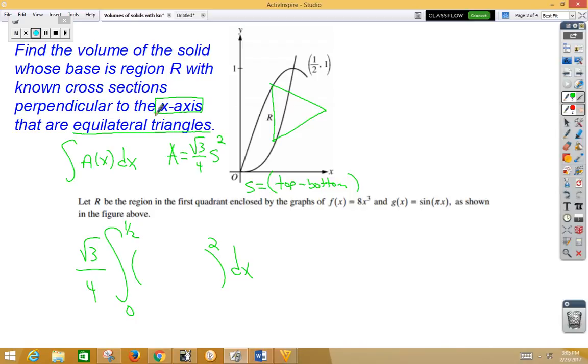My top function, well, from here, the furthest one away and the closest to the x-axis. So my top function is g of x. My bottom function is f of x. And again, it's squared because my formula for my area function is radical 3 over 4 sides squared.